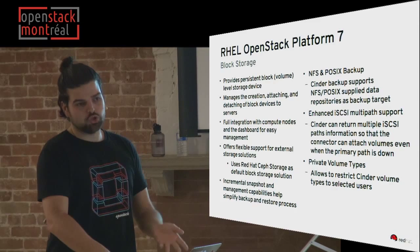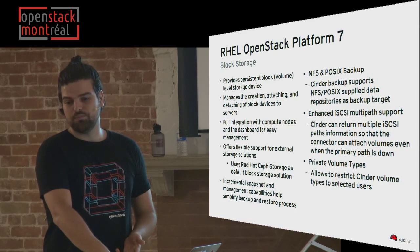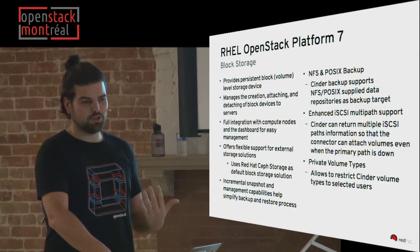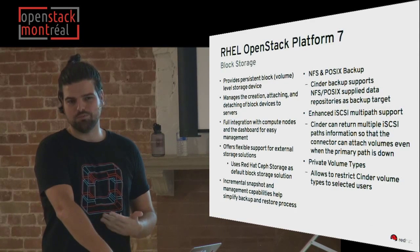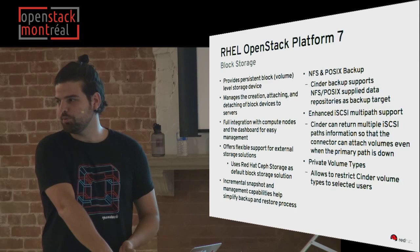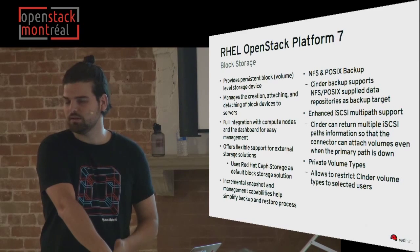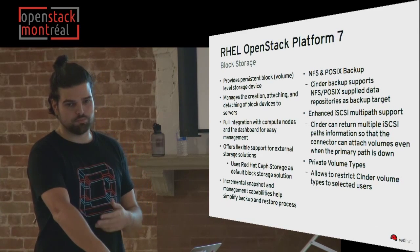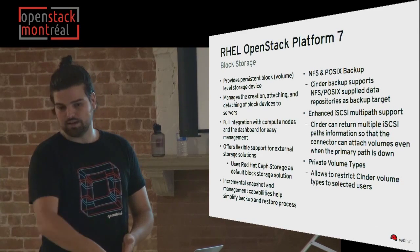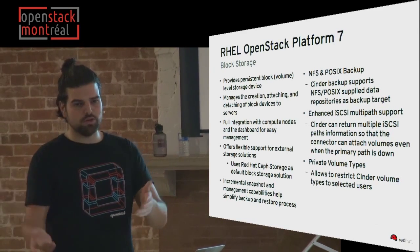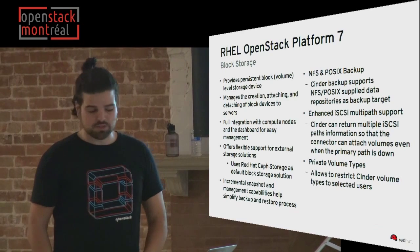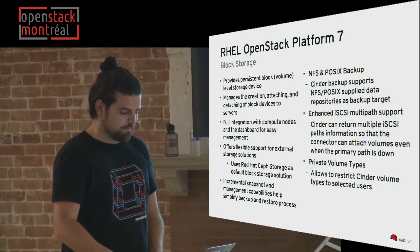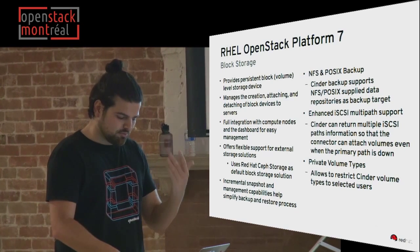iSCSI multipath — also very cool for reliability purposes. In production, you almost never put only one iSCSI path. You put many, like different network links or different network adapters. Now you can finally define that.